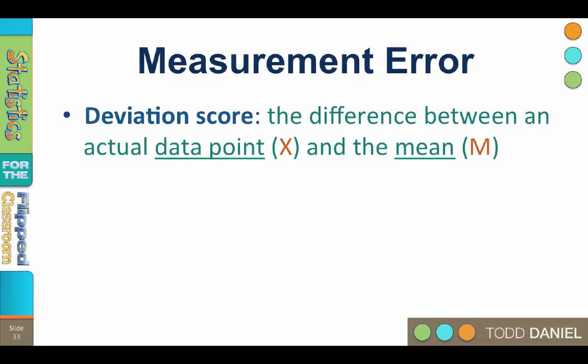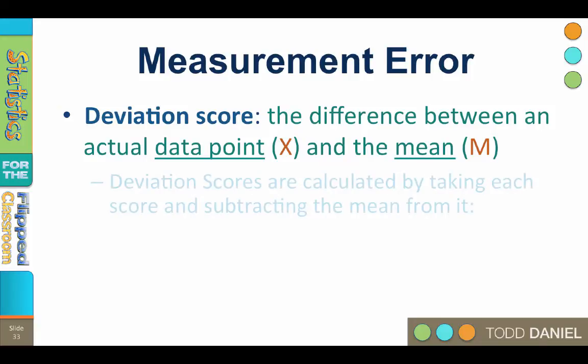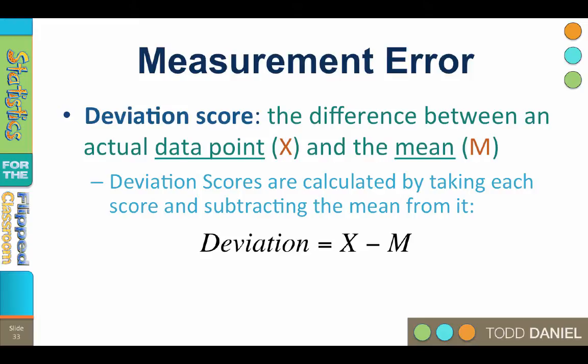A deviation score is the difference between an actual data point, X, and the mean, M. Deviations are calculated by subtracting the mean from each score, X minus the mean.